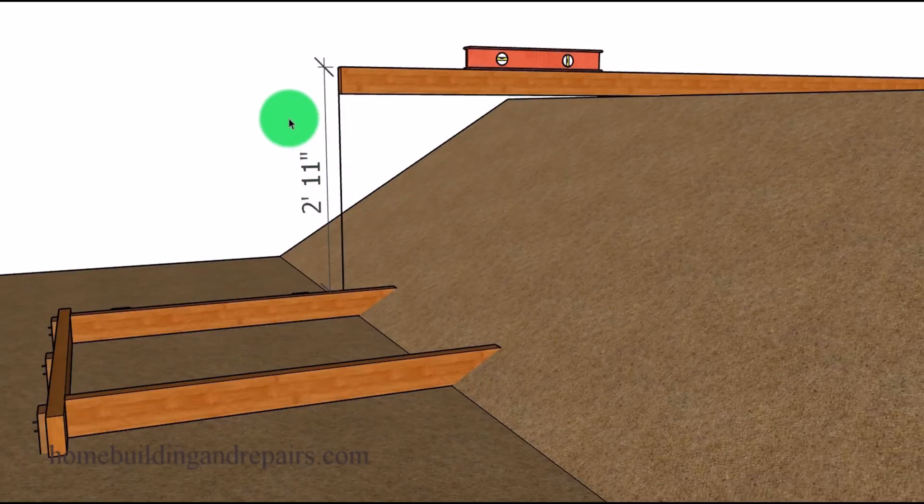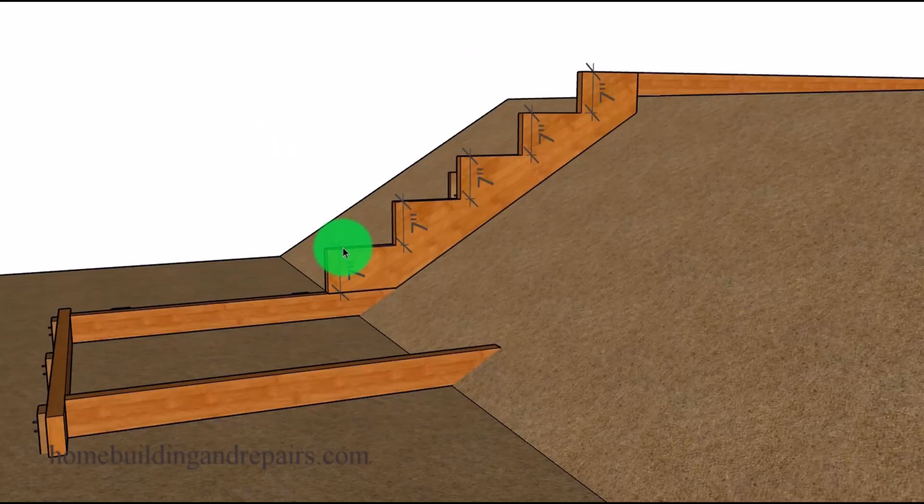And if we divide 5 into 35, we're going to get 7 inches. So that will give us 5 7-inch risers. And these are the numbers that we're going to use to lay out our stair stringer.